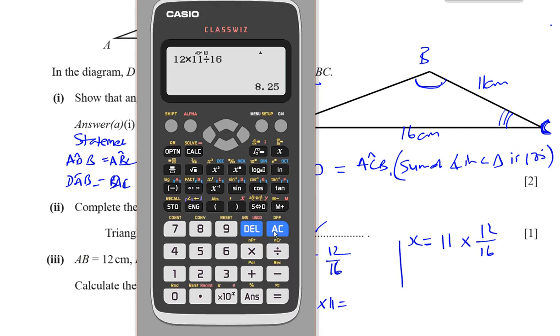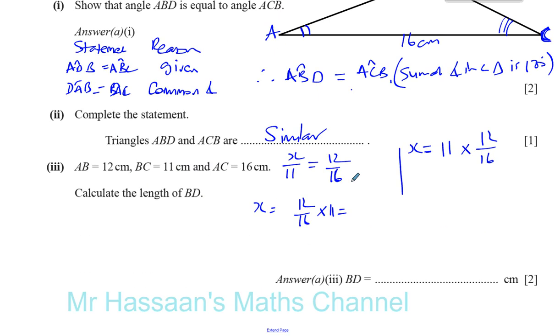And I'm going to do 11 times 12 over 16. And that gives you your answer, which is 33 over 4, which is 8.25. So 8.25 is our final answer to that question. And there we have it. Thank you for listening.